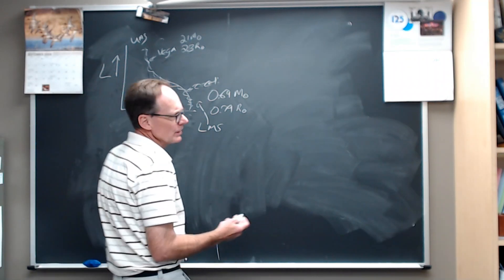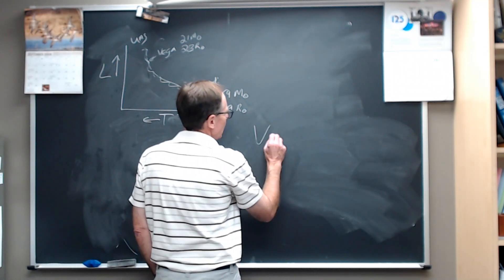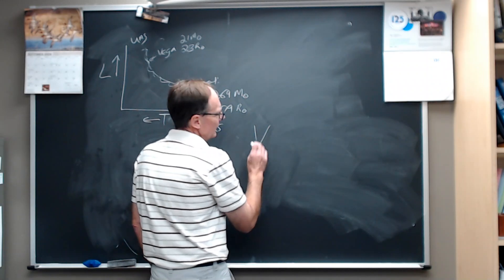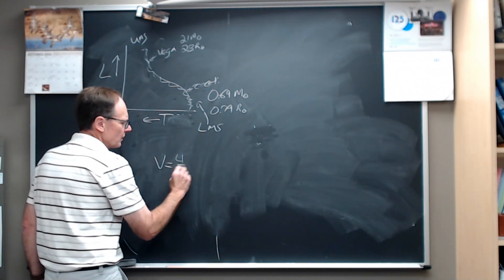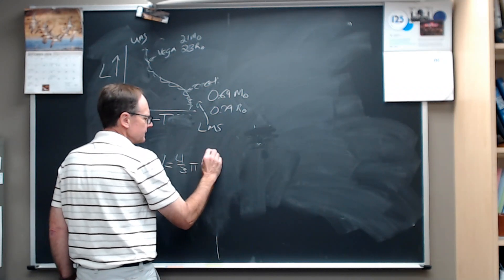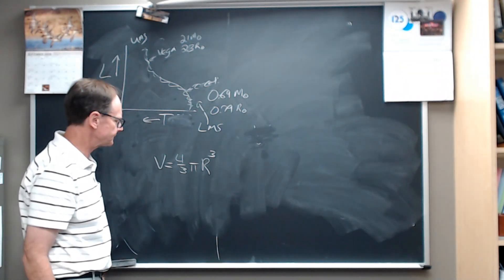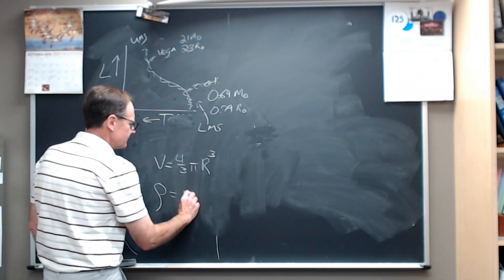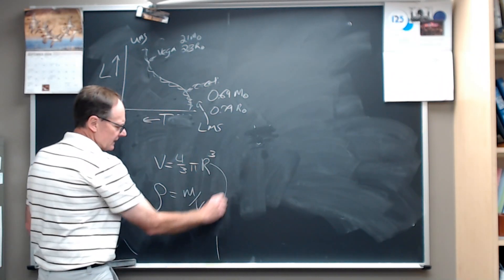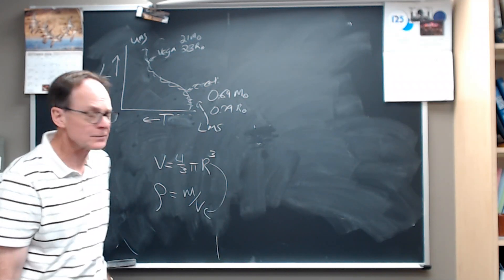What we're going to do is we're going to treat these things as spheres, and we're going to say the volume of the sphere is four-thirds pi r cubed. Let's write that over here. The volume of the sphere is four-thirds pi times the radius of the star cubed. And the density of the star then is going to be mass over volume. We're going to stick that in for the volume.